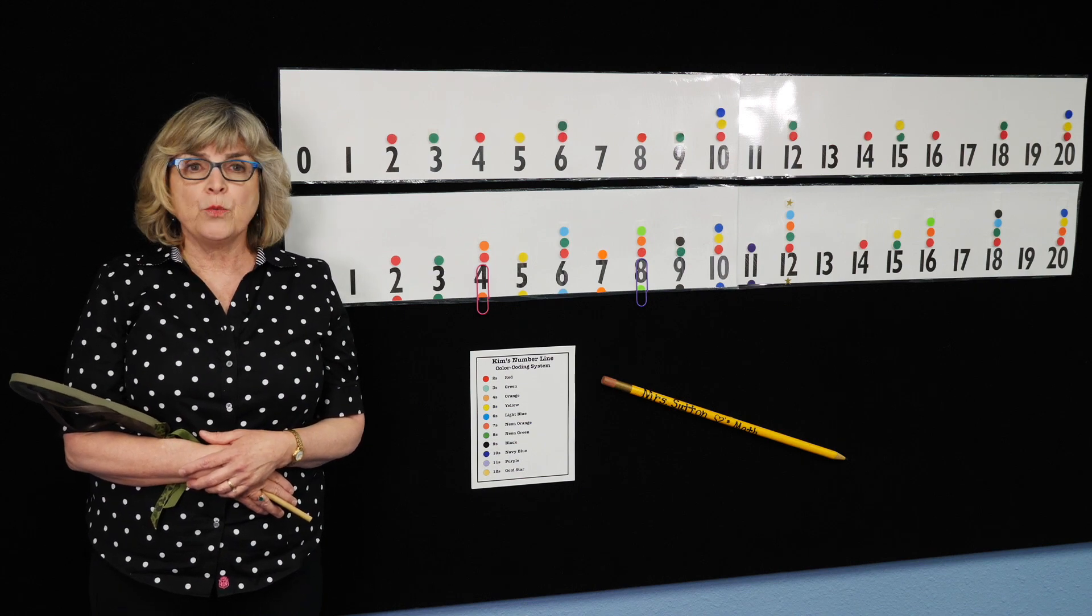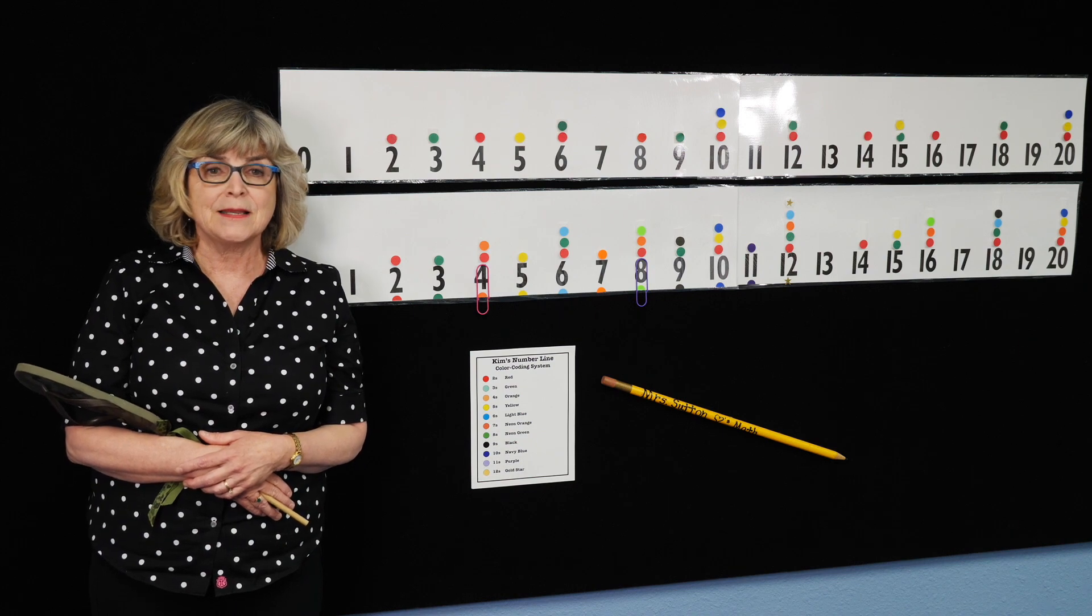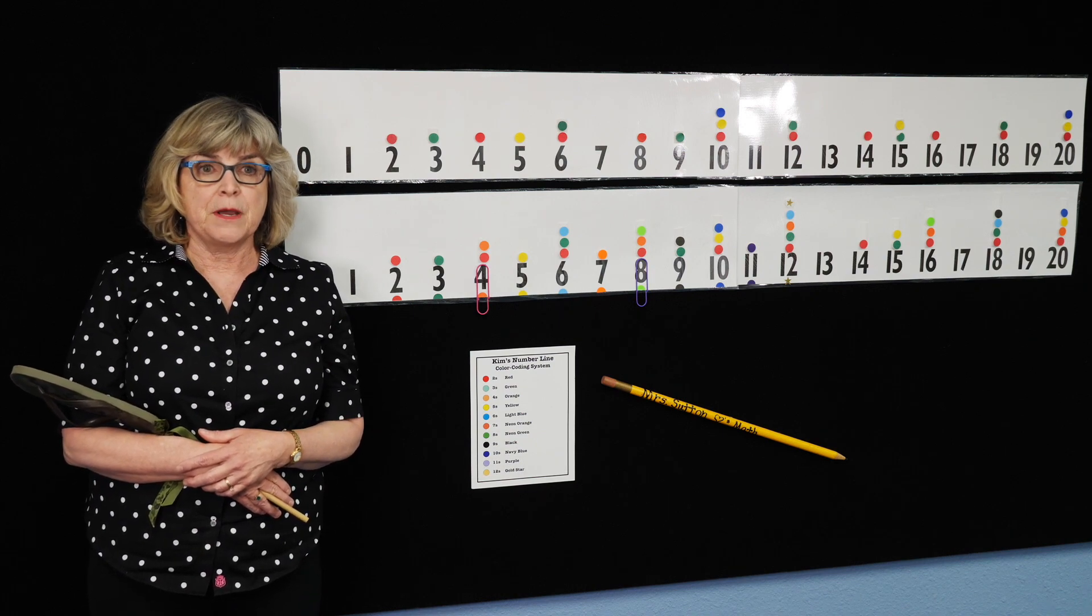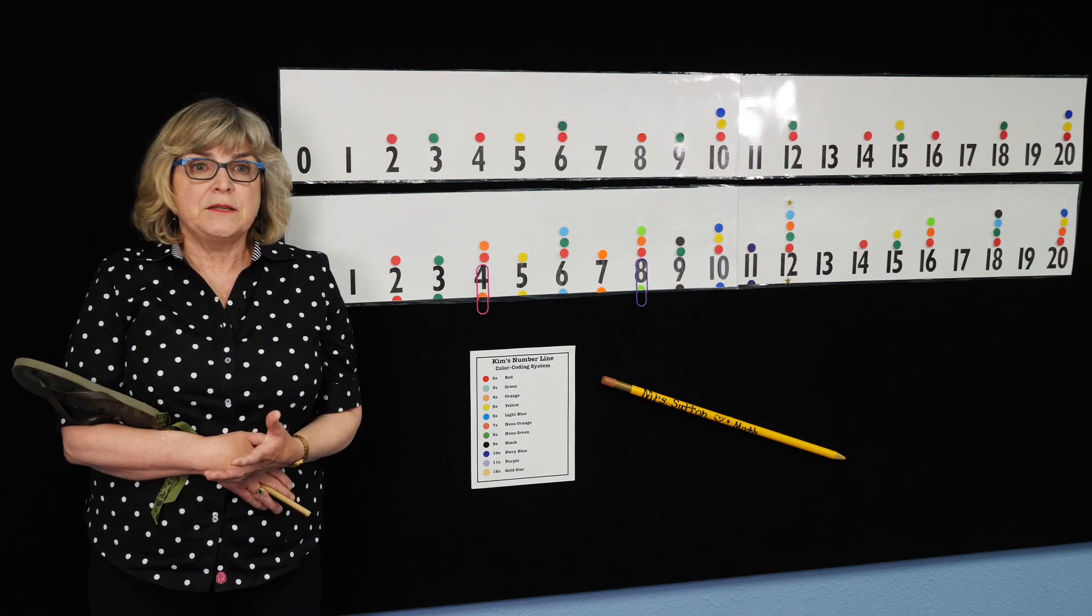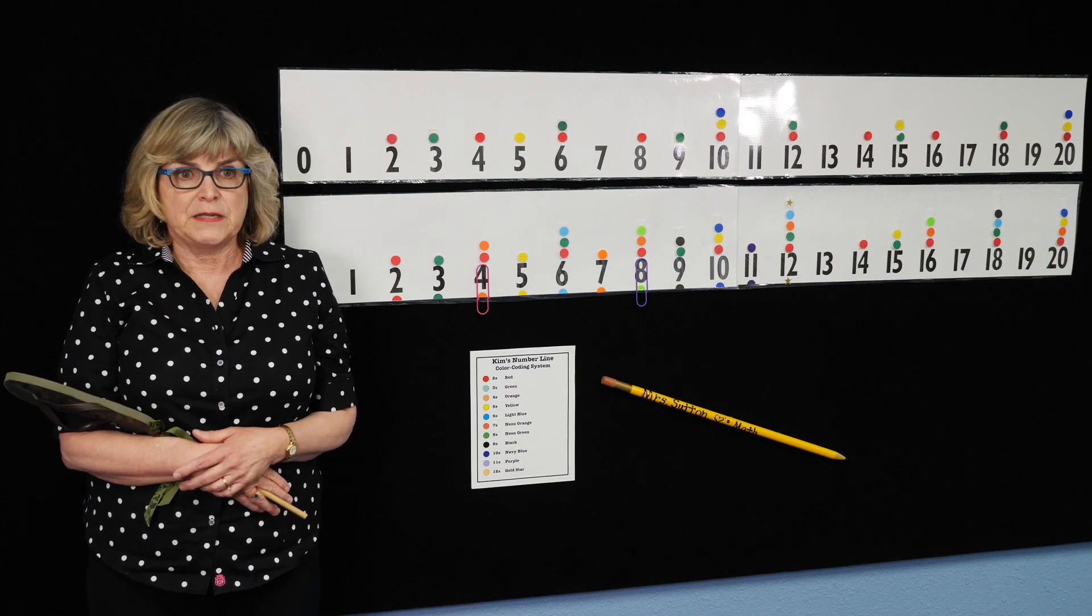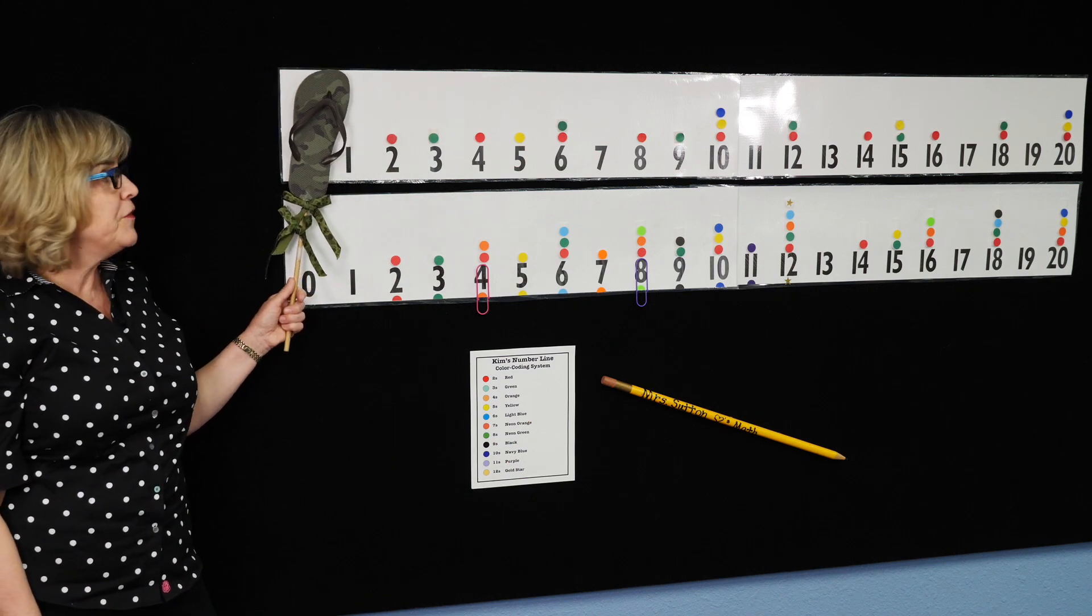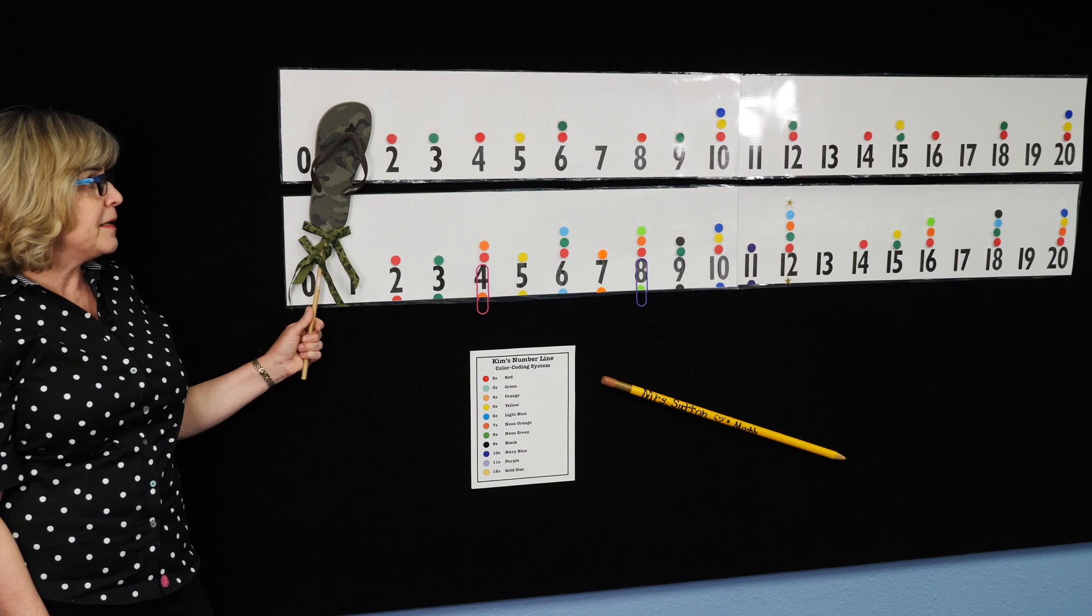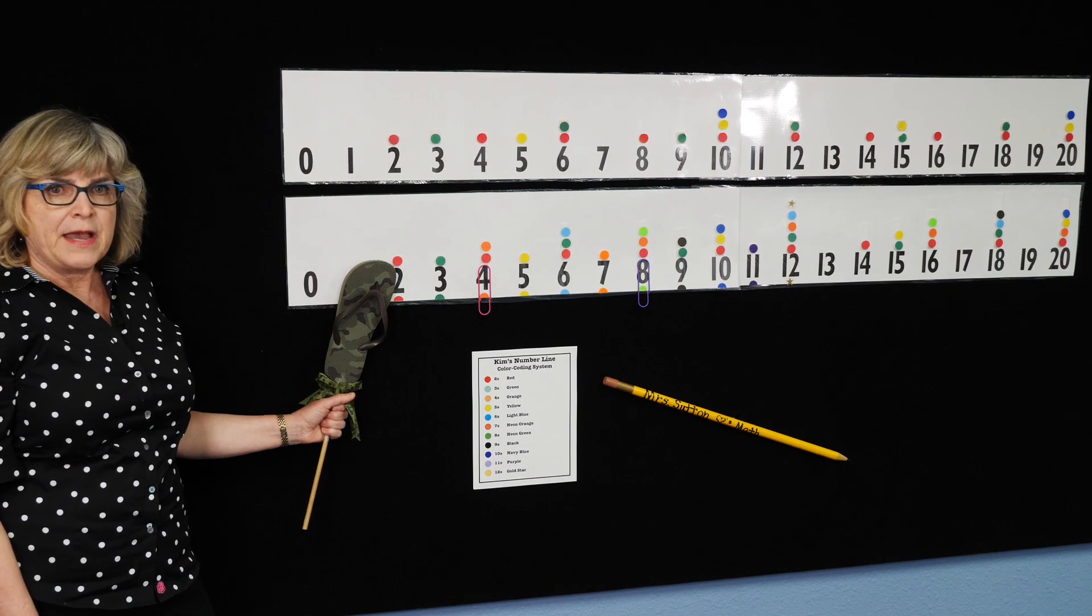The number one skill that guarantees a student's success in middle school mathematics is their ability to factor numbers. The patterns of numbers have to begin and be developed long before middle school. This visual creates a picture of the growth patterns that start skip counting, extend into multiples, and go into factors.